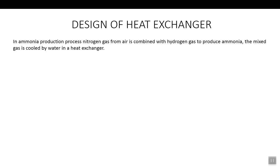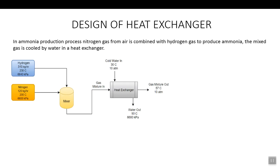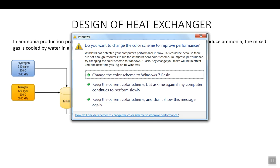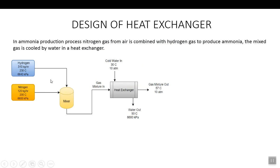I will first explain the simple flow sheet of this ammonia production. We are going to take hydrogen with a flow rate of 310 kg/hr at 230°C and 6640 kPa. Nitrogen is the second component with a flow rate of 120 kg/hr at 200°C and 6600 kPa. We will mix these two gases in a mixer, then cool the gas mixture outlet using cold water available at 30°C and 10 atm. The water outlet temperature is 90°C and pressure 6680 kPa. The gas mixture must be cooled to 57°C at 10 atm.